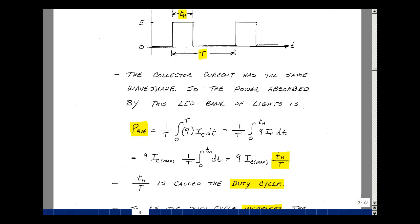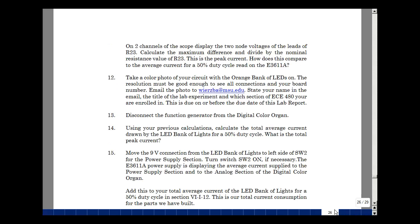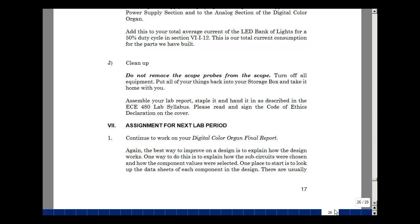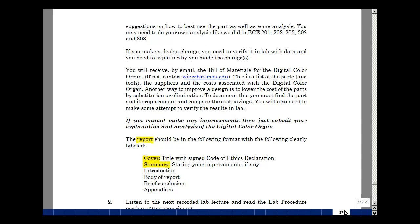So these are some of the issues that you need to think about with a digital color organ if you're going to try to improve the performance. Let's go to page 26. It talks about what to do for the next lab. This was mentioned also in the previous lab lecture. Let's go to the next page here. And it's talking about writing a report. I thought I'd just talk a little bit about that in this lab.